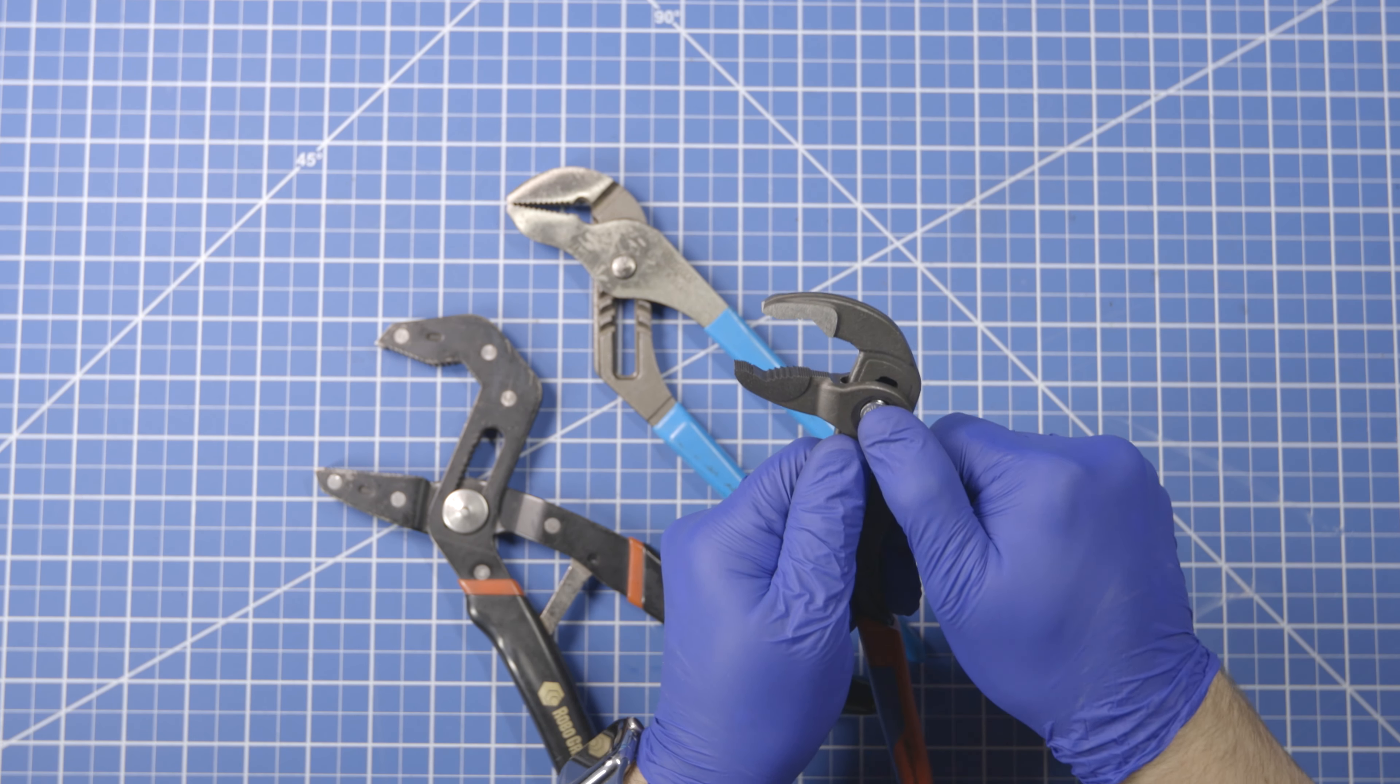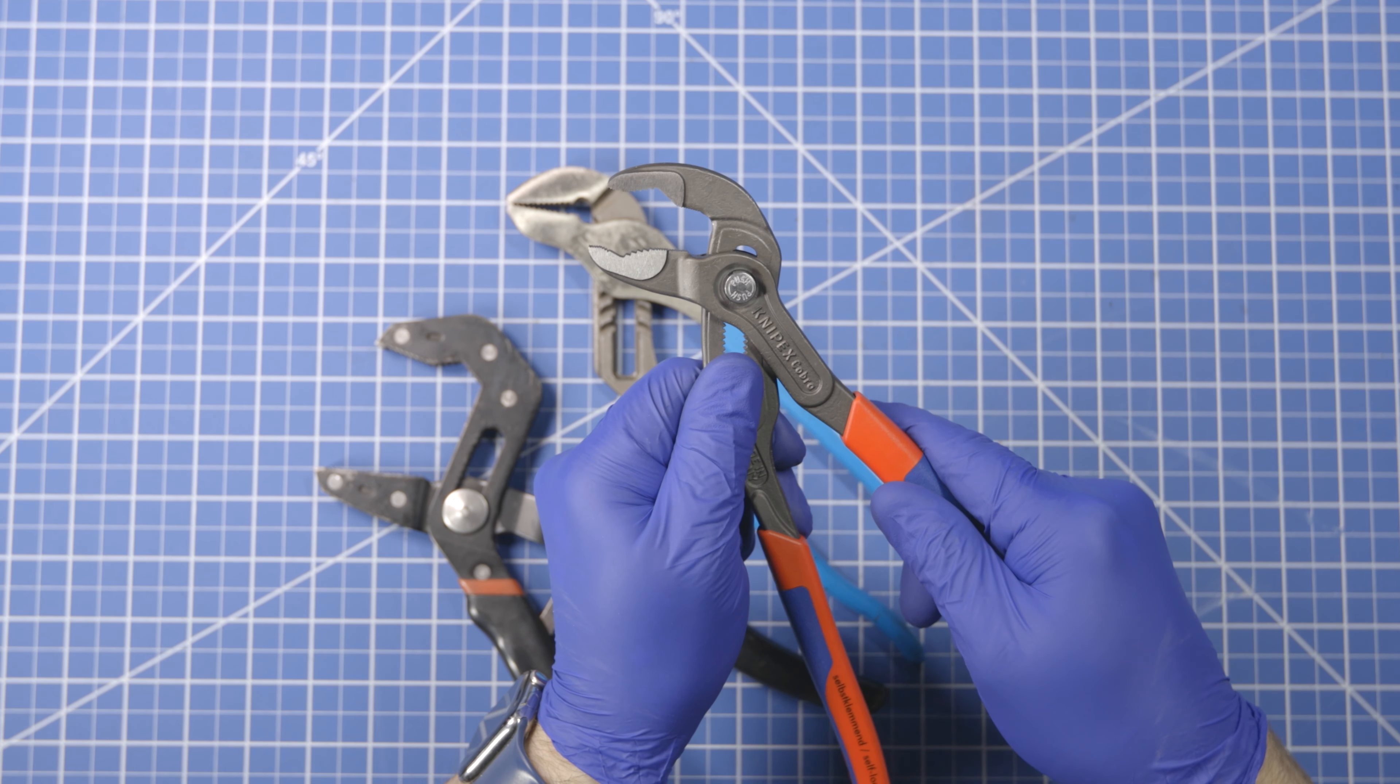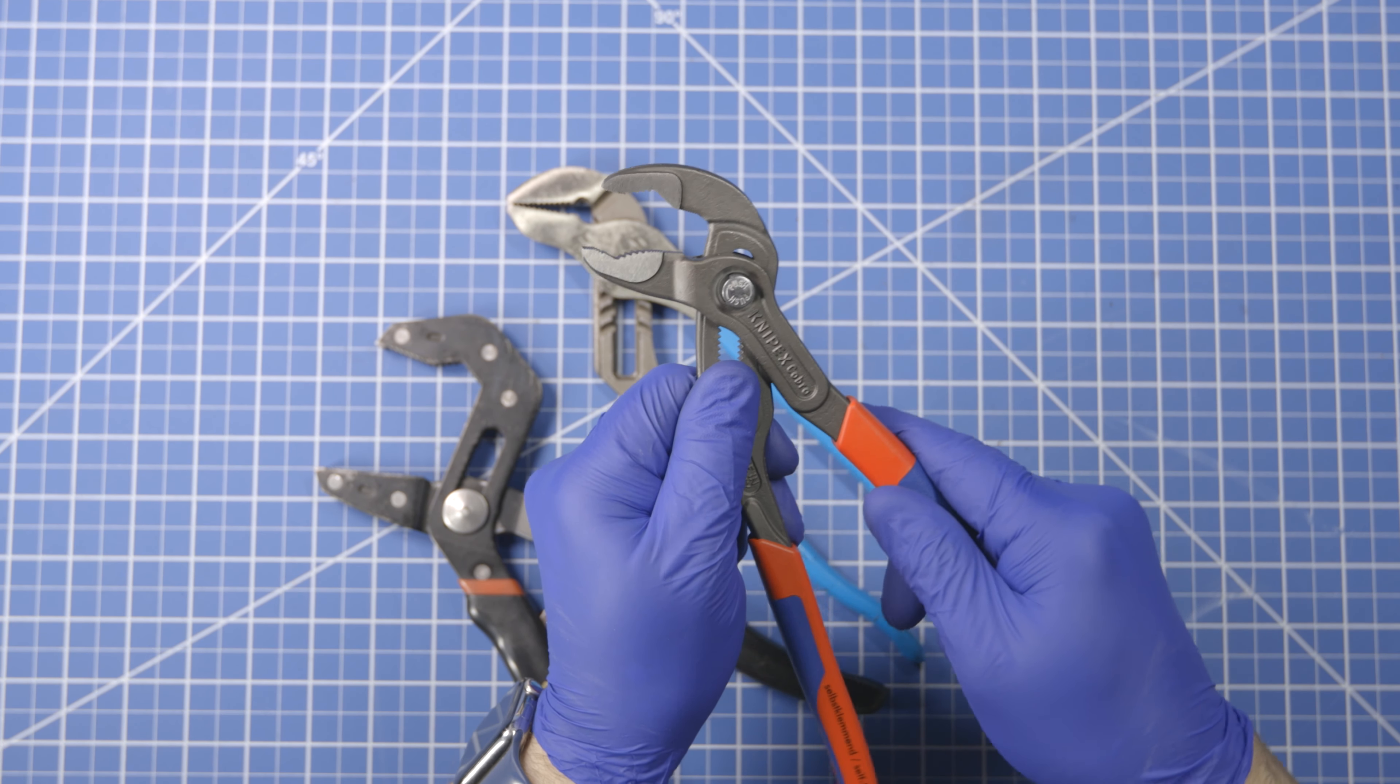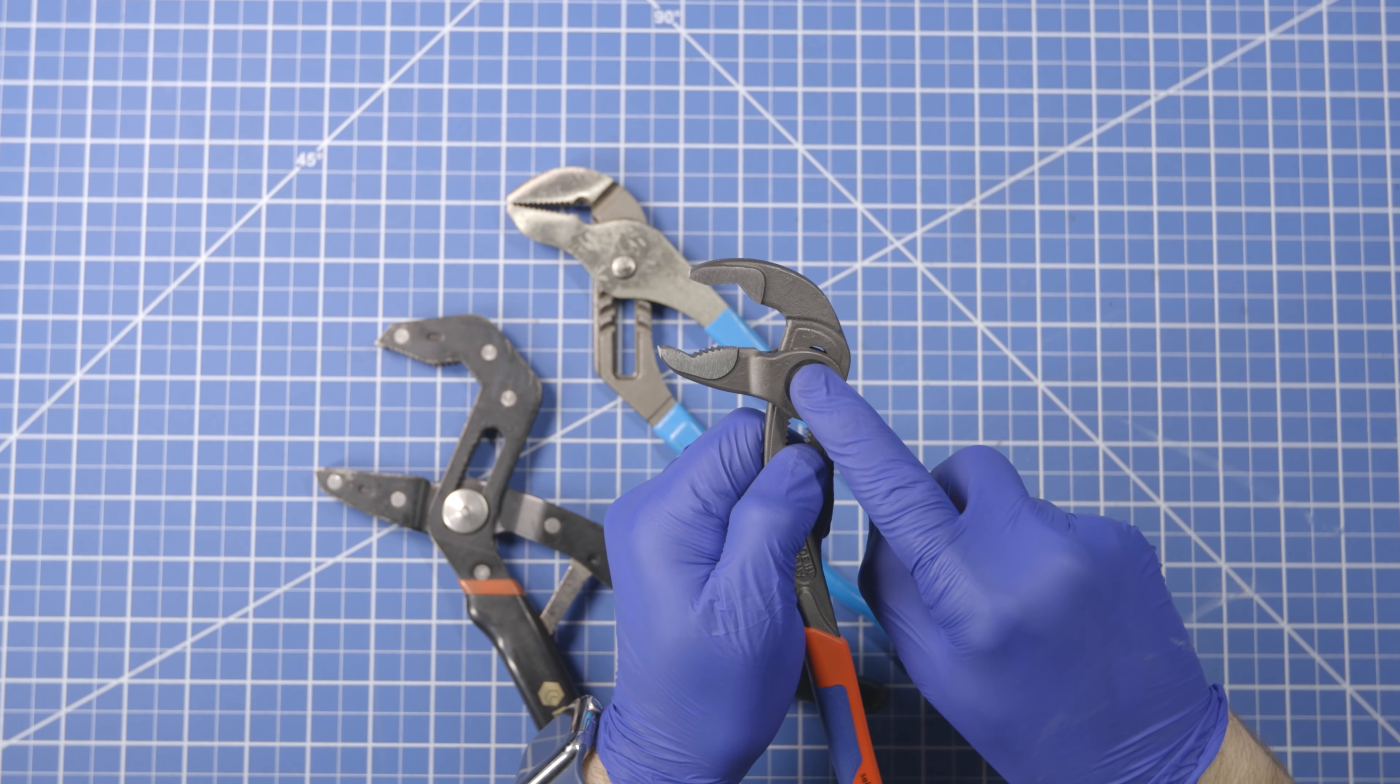So when you adjust it for what screw you need or fastener head or whatever, you get it to about the height you want and then you try to get it to balance on the teeth. Well, you heard that snap at one point. There you go.